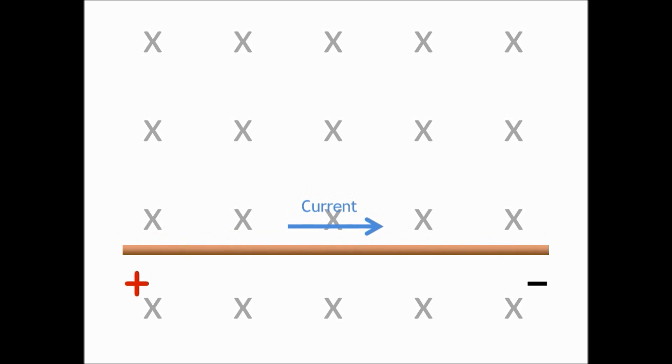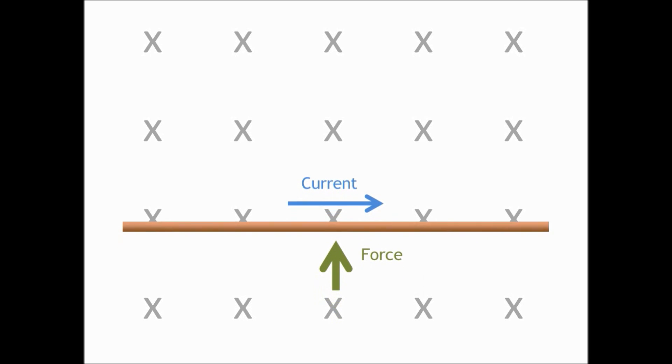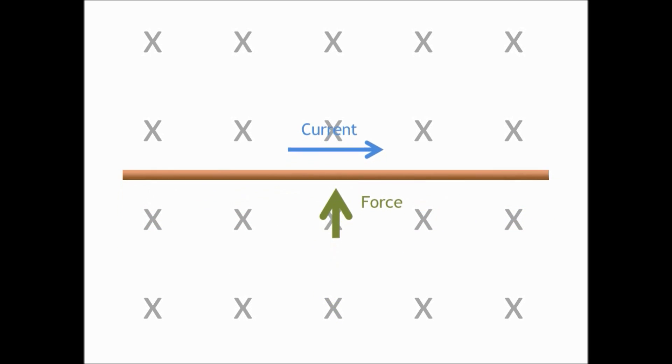This is the principle behind electric generators. If you run an electric current through a wire in a magnetic field you will cause a force on the wire. If the wire is able to move this force will cause it to accelerate. This is the principle behind electric motors.